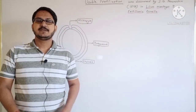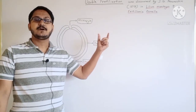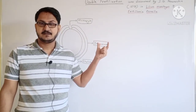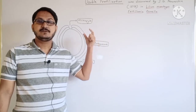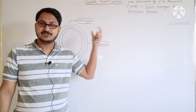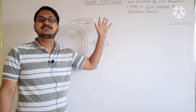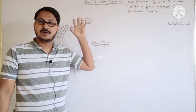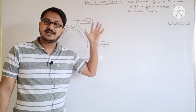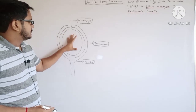Hello class, today our topic is double fertilization, and this topic is from sexual reproduction in flowering plants. Today we'll understand what is meant by double fertilization and how it takes place in angiosperms. Double fertilization is a characteristic feature of angiosperms.